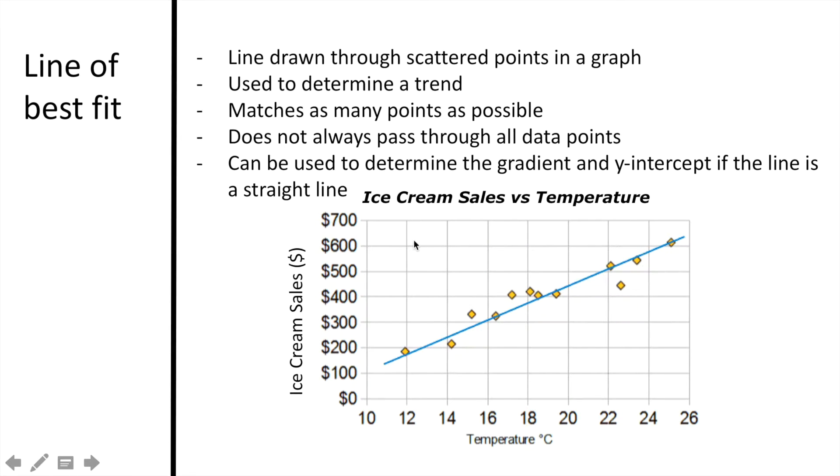When using a scatterplot graph, we use something called a line of best fit, and this helps us to understand the data and to determine a trend. A line of best fit is a line that is drawn through the points in a graph. The line matches as many points as possible. It does not always pass through all the data points, and this line of best fit can be used to determine the gradient and the y-intercept if the line is a straight line.